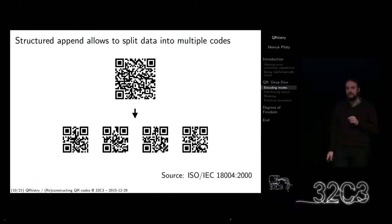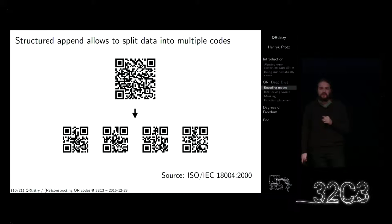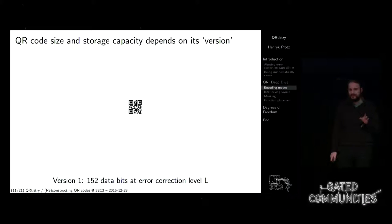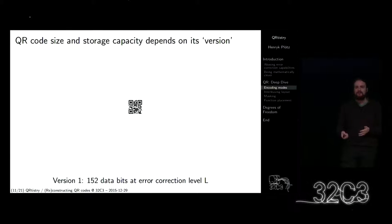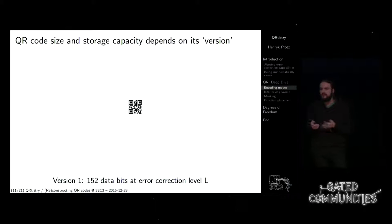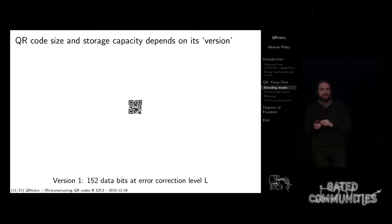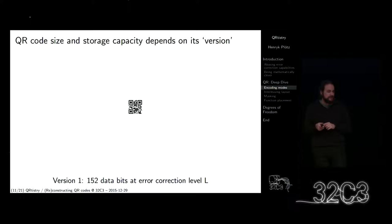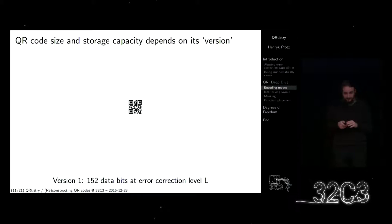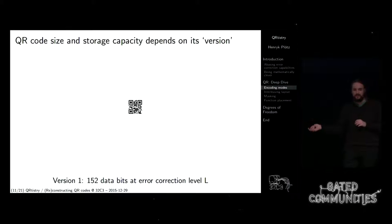Wie viel kann man in einem QR-Code unterbringen? Eine ganze Menge. Codegröße und die Speicherkapazität hängen von der Version ab. Es gibt 40 Versionen — aber das sind keine Software-Versionen, sondern es ist nur die Länge des Codes, die angegeben ist. Es gibt etwas, was man als die Version bezeichnen würde — das ist der Model-Code. Wir benutzen immer den Model-2-Code; der Model-1-Code wird nicht mehr benutzt.